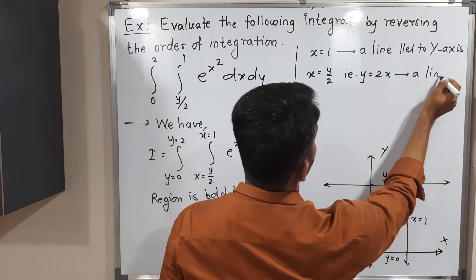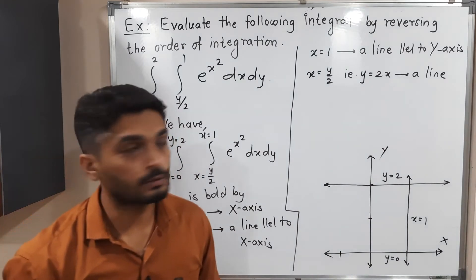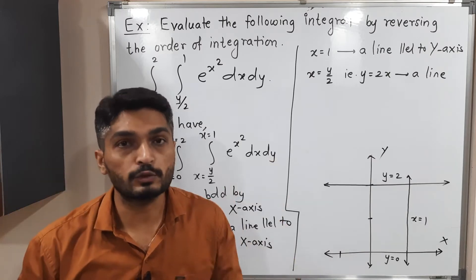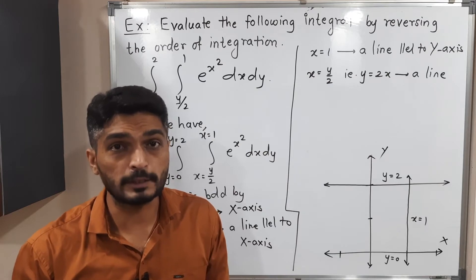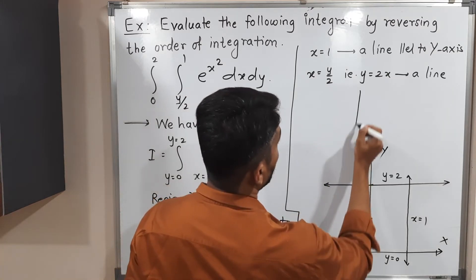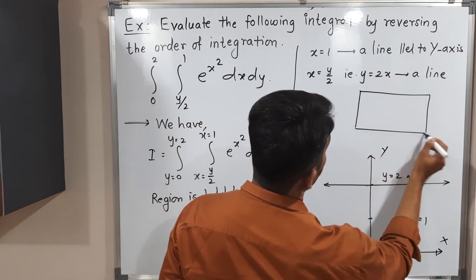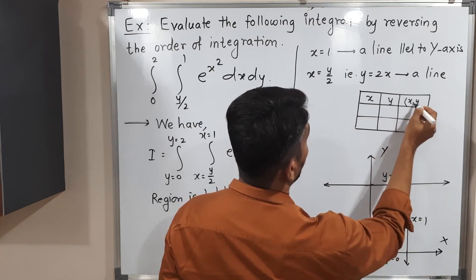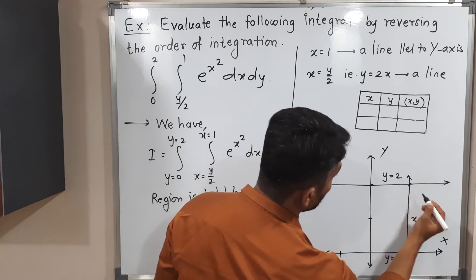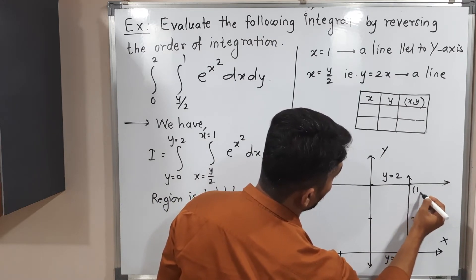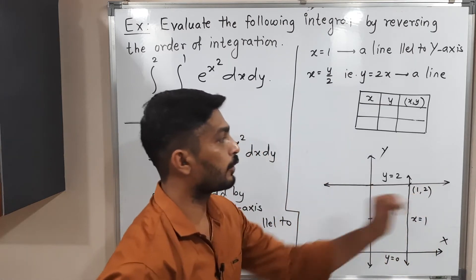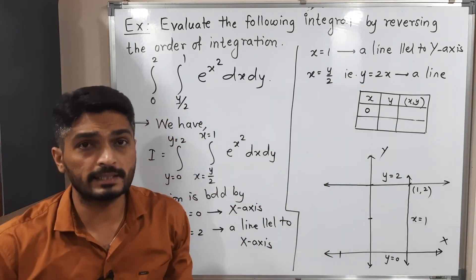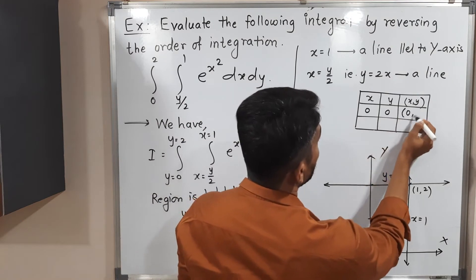Since y equals 2x is a line, to draw it we need two points. We draw a table of values: put x equals 0, and y equals 0, giving the origin (0, 0). For a second point, we put y equals 2 to find the intersection with y equals 2. Substituting gives x equals 1, so the point is (1, 2). We then join these two points to get the straight line y equals 2x.